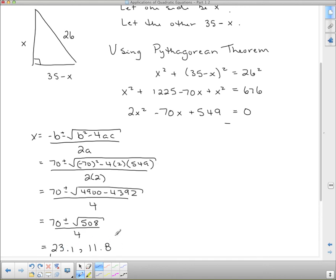So, in this case, we get two values of x. So, we've got the case where x is 11.8, or we have the case where x is 23.1. Now, if you actually use the 35 minus x, you'll see that if x is 11.8, then the other side is 23.1. And likewise, down here, if x is 23.1, then this one is 11.8. So, we've actually just got two of the same triangle, just different orientations.